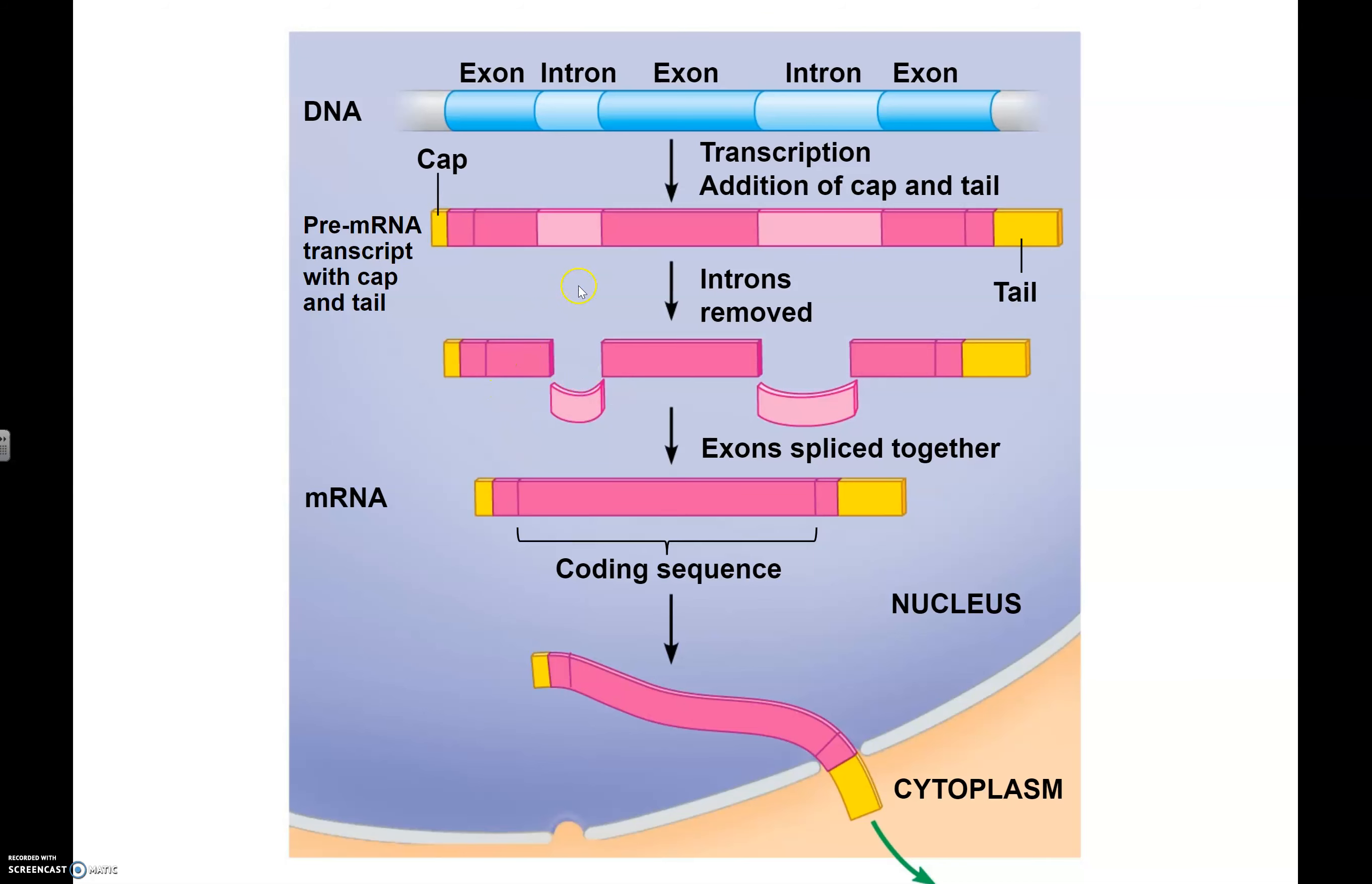The exons, the dark purple regions, have to merge together to give us our final mRNA. Now what we can see here is a continuous coding sequence that's no longer interrupted by introns.